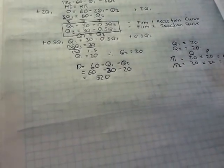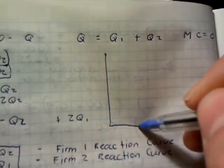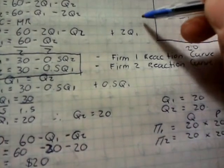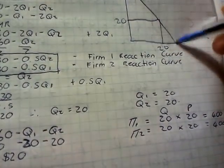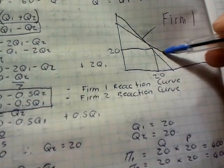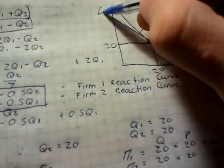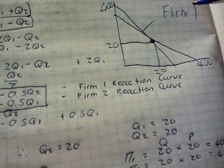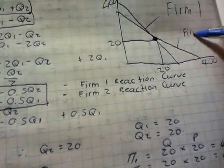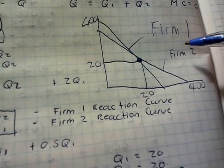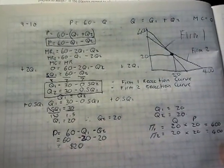Using this information, we're able to draw the reaction curves. Firm 1's reaction curve and firm 2's reaction curve are plotted with quantity on each axis. You place the quantities on the axes to show where the two curves intersect. You do not have to draw this to get marks in the exam, but drawing it might give you some extra marks because it shows understanding. So that is Part A of the question.